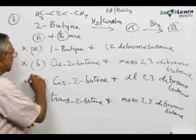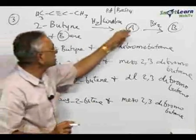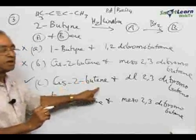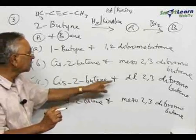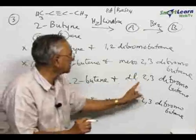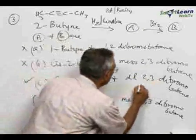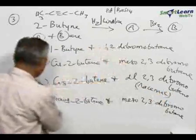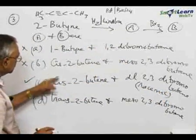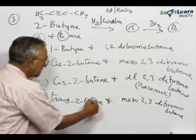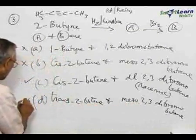C is the correct answer because this selectively gets reduced to cis-olefin which is cis-2-butyne, and which on bromination will lead to a mixture of plus and minus, a DL racemic mixture of 2,3-dibromobutene. Therefore, this is a correct answer. Whereas the trans-butyne is not being obtained, A is not correct. Trans will give meso but trans-butyne is not being obtained.